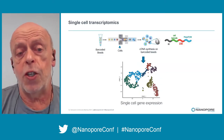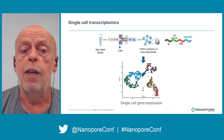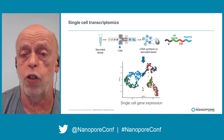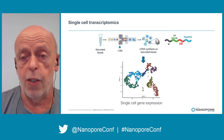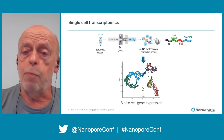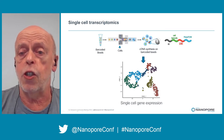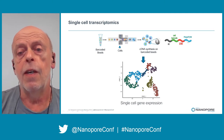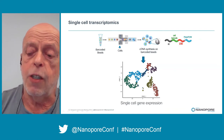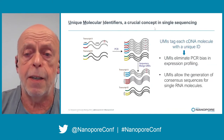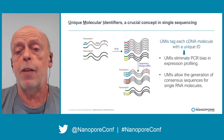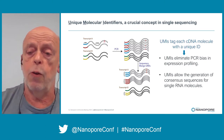Most approaches for single-cell transcriptomics use emulsions to co-encapsulate cells and barcoded beads into droplets. The cDNA is synthesized there, and you end up with barcoded cDNA. Those primers on the beads also contain a short random sequence called UMI. UMI stands for Unique Molecular Identifier — these are short barcodes that tag cDNA molecules and are a very important feature for single-cell sequencing, since you tag each cDNA molecule with a unique ID.